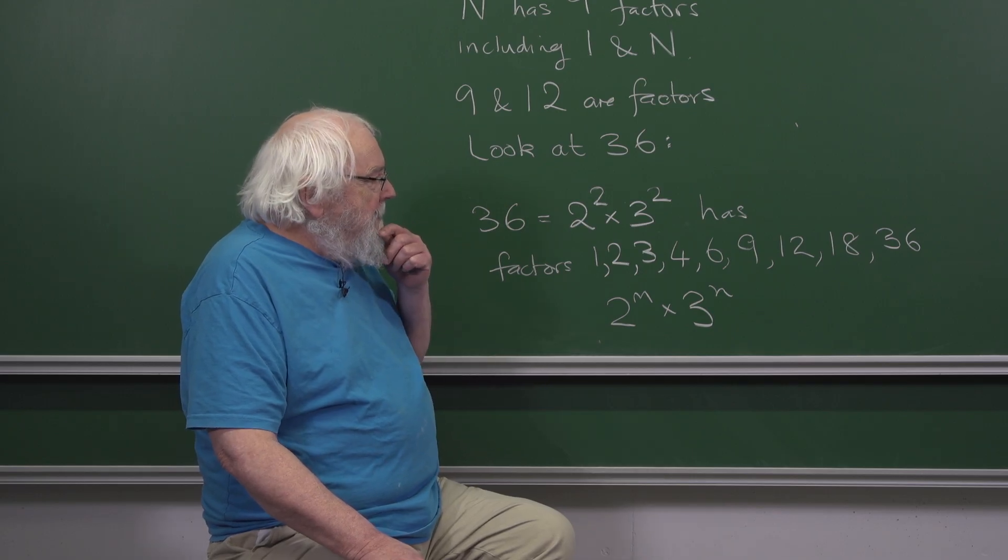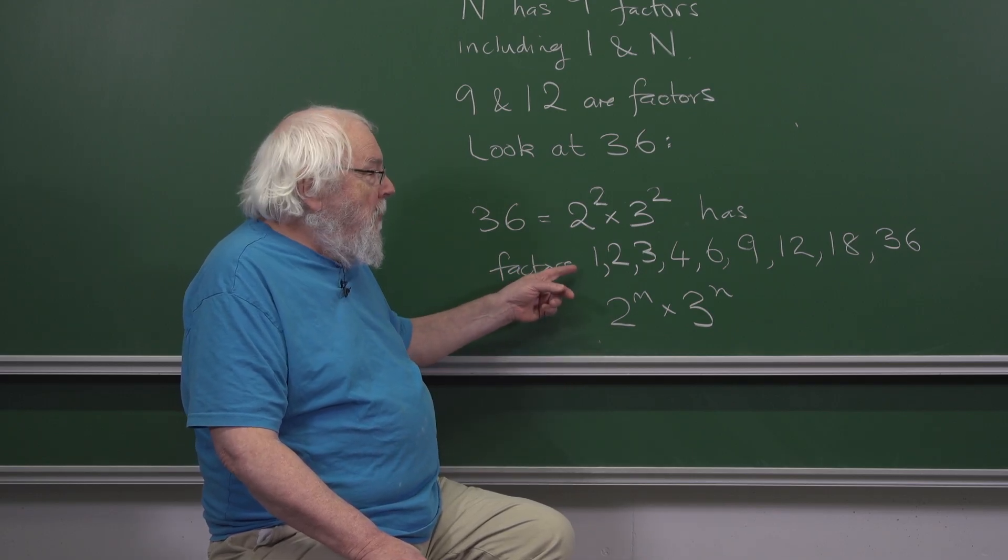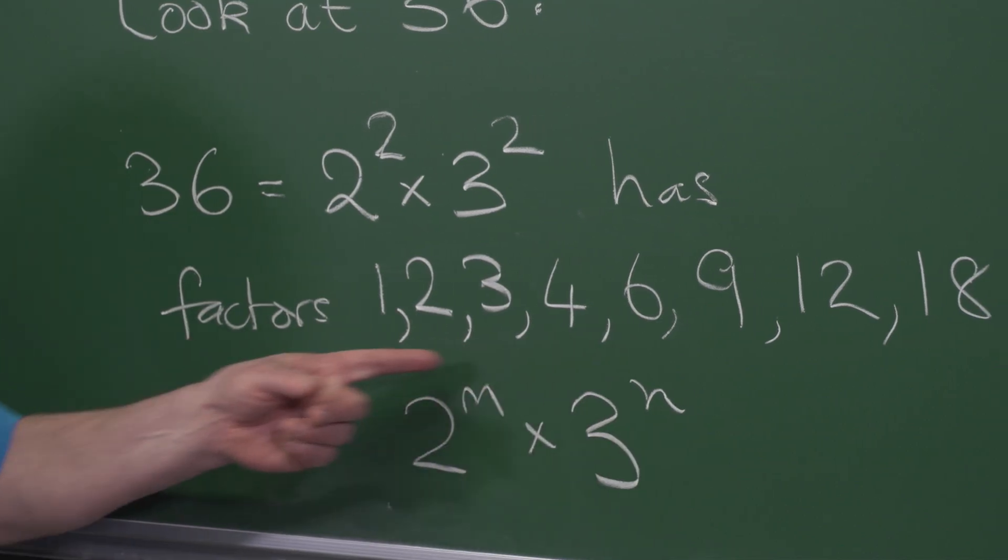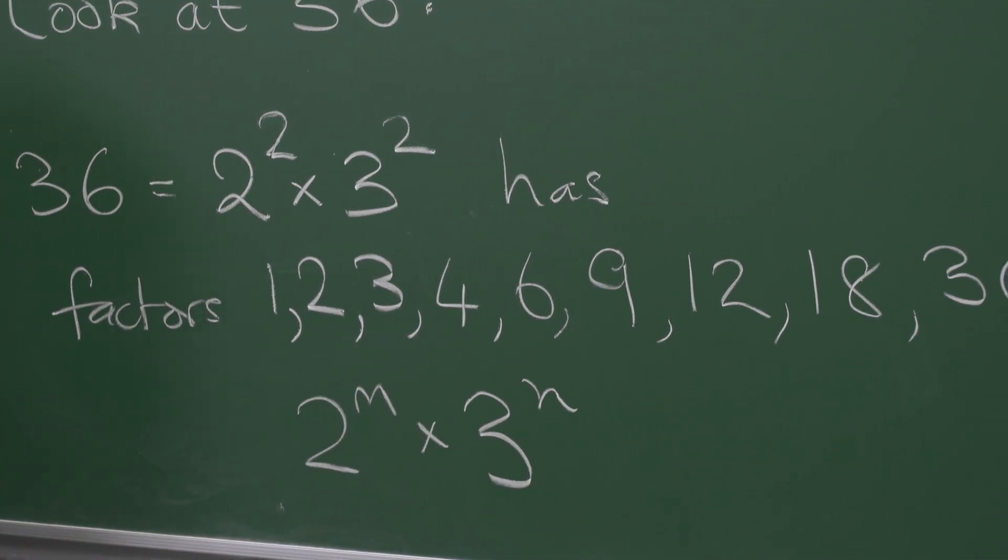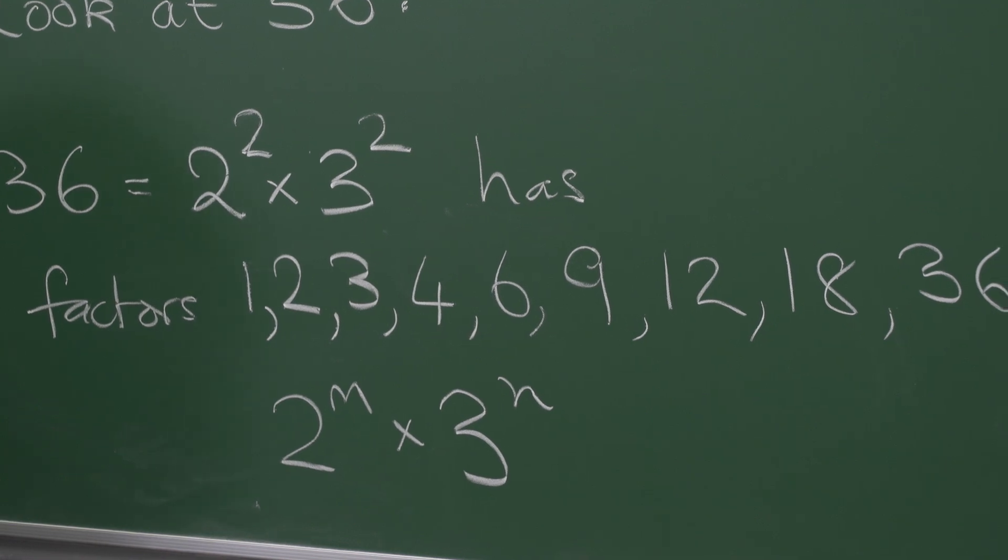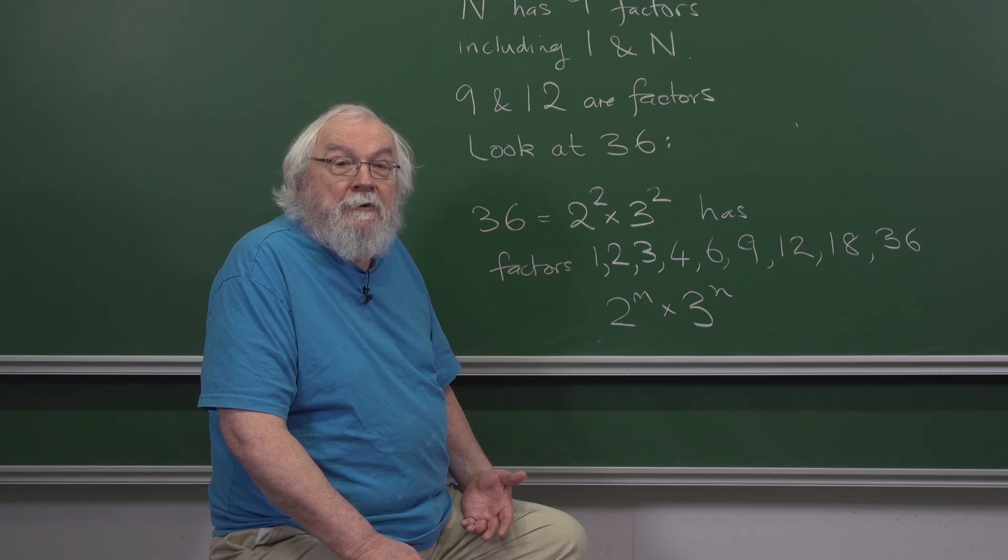That means that its factors will include all of the factors of 36, and if n is not 36, then you have to include n itself and that'll give you an extra factor.